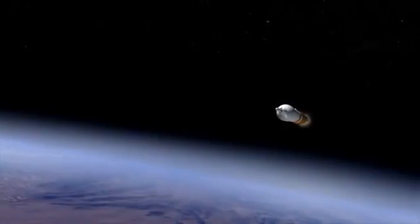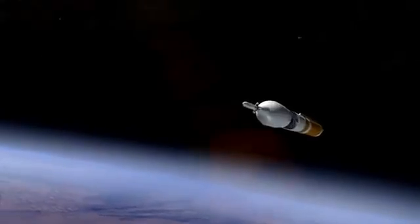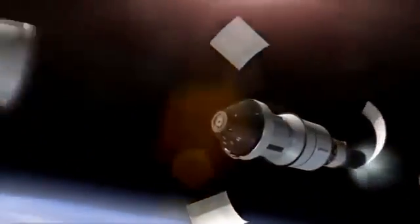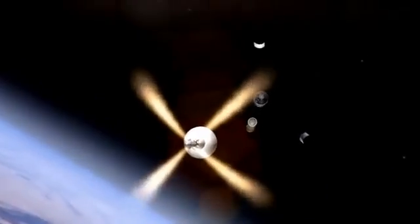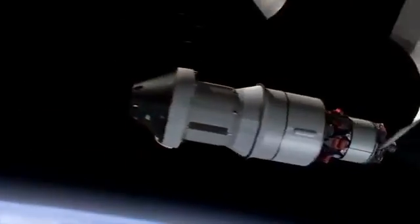As it punches into Earth orbit, Orion will jettison its launch abort system. This is a safety feature designed to pull Orion and its crew out of danger if there were a problem with the rocket during ascent. Orion's journey is just beginning.